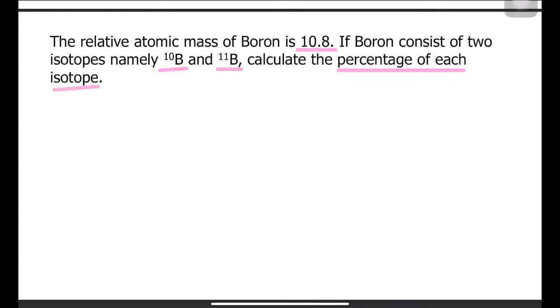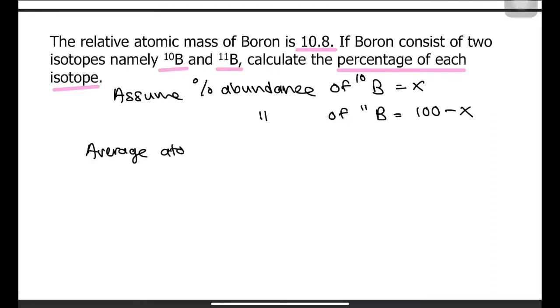Firstly, let's assume that the percentage abundance of boron 10 to be x. Therefore, the percentage abundance of boron 11 would be 100 minus x. Next, do recall that relative atomic mass is also equivalent to average atomic mass value. So, average atomic mass comes with a formula.